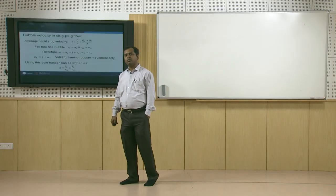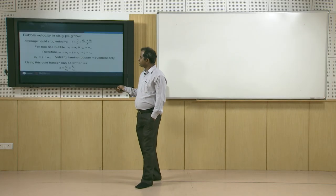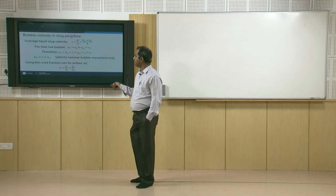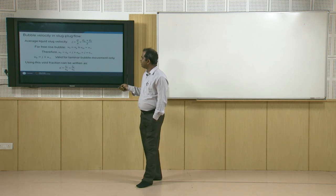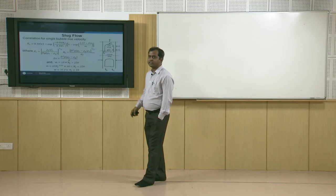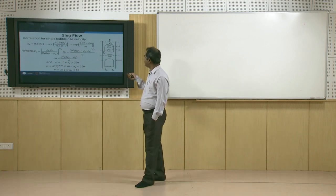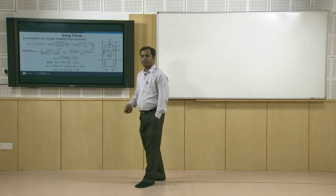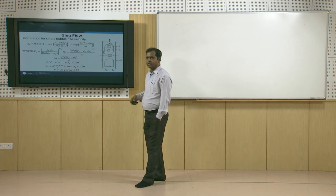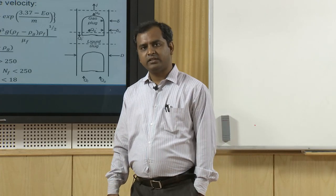The average void fraction α = j_g / u_g. Since u_g equals u_b in slug plug flow, α = j_g / u_b. For laminar flow: u_b = j + u_∞ and α = j_g / u_b. Note that the void fraction varies at different cross-sections with time as flow progresses — it is zero through the liquid slug and finite through the gaseous plug — so we are always interested in the average void fraction in the cell.